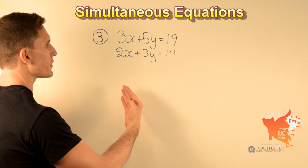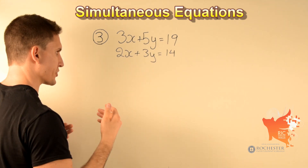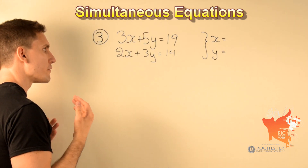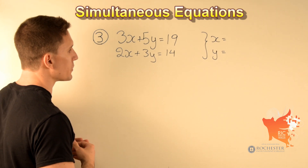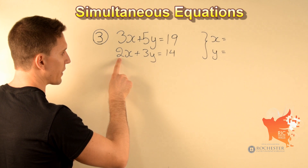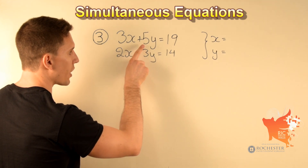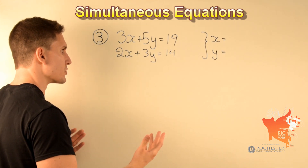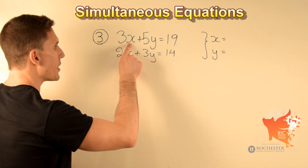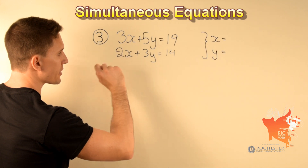In this third and final example we have the simultaneous equations 3x plus 5y equals 19 and 2x plus 3y equals 14. Notice here the coefficient of x in the first equation is 3 and in the second is 2 — they are not the same and not opposites. The same goes for the coefficients of y: 5 and 3. So we can't simply add or subtract to eliminate a variable.